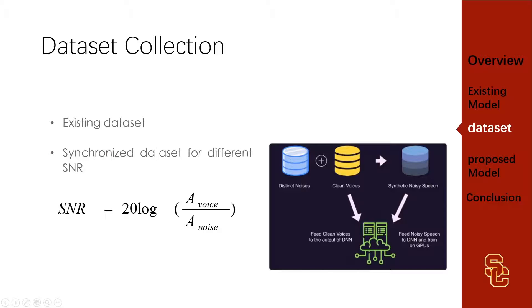Let's come to the dataset collection part. We have two solutions. The first is using existing datasets with clear voice and voice mixed with noise. However, the mixed data has different SNR values and we don't know the specific values. So we also created a dataset ourselves, using clear voice data and noise sourced from websites, mixing them together to get a training set with a certain SNR.